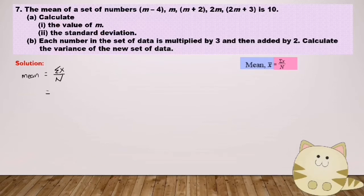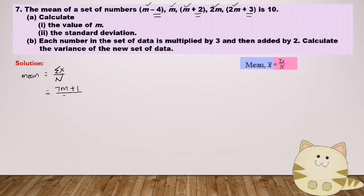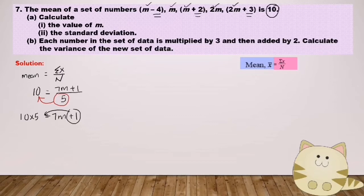For this question, I use the mean formula to find m. I find sigma x: counting the m terms gives 7m, and the constant terms are negative 4 plus 2 plus 3 equals 1. So sigma x equals 7m plus 1. Divided by the number of data, which is 5, and from the question the mean equals 10. So 10 equals (7m plus 1) over 5. Multiplying both sides: 50 equals 7m plus 1. So 7m equals 49 and m equals 7.